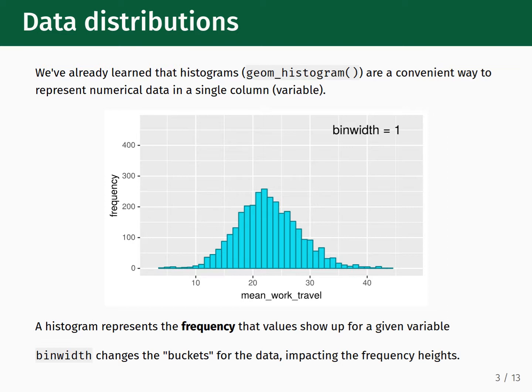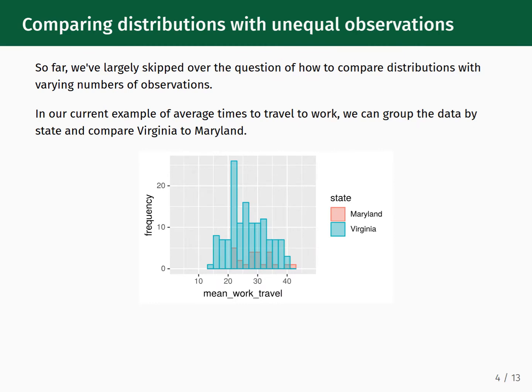This means we need to take care when selecting a bin width for our data. This variation in data counts and bar heights in histograms also comes into play if we want to compare two or more data distributions against one another. So far, we've skipped over the question of how you would do this, especially if the number of observations within each group is not the same. Let's illustrate what I mean by taking a look at the average times to travel to work in two different states, Virginia and Maryland.